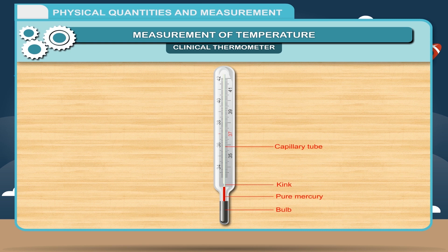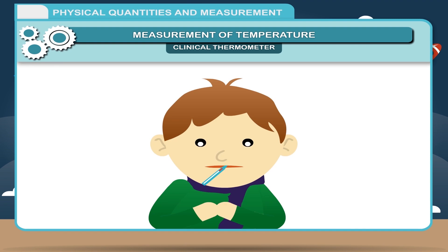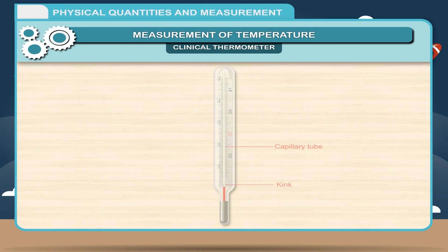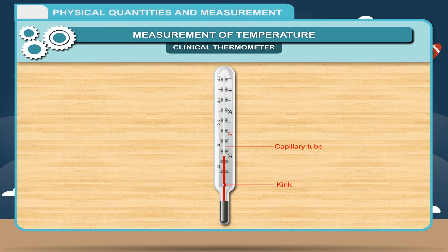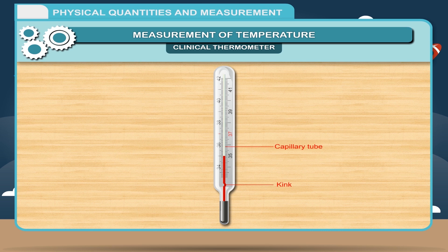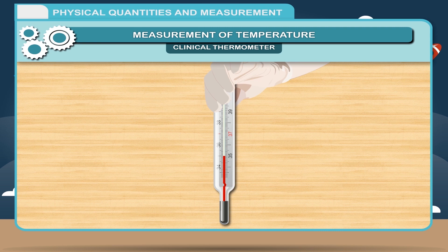When the thermometer is placed in the patient's mouth below the tongue or under the armpit, the mercury expands and pushes through the kink into the capillary tube. The kink ensures that the mercury does not move back into the bulb when the thermometer is taken out of the patient's mouth. This gives time to take the reading. After taking the reading, mercury can be returned to the bulb by giving jerks to the thermometer again and again.